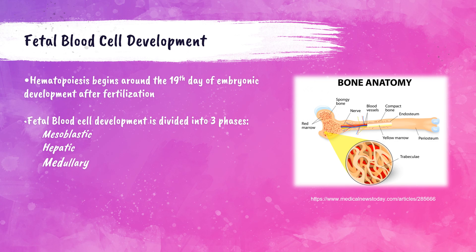Hematopoiesis actually begins as early as 19 days of embryonic life. When developing inside a growing fetus, fetal blood cells have three different phases of development: the mesoblastic phase, the hepatic phase, and the medullary phase.